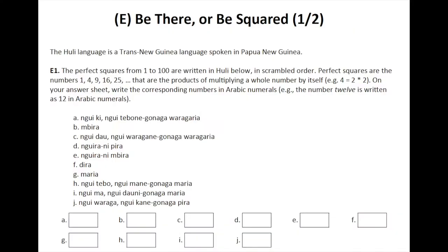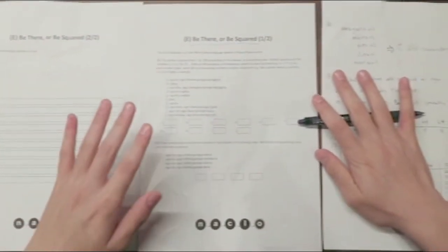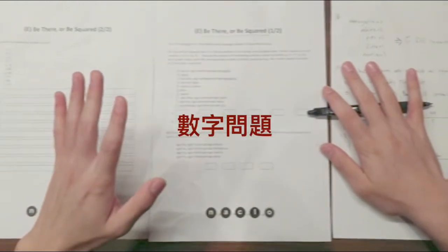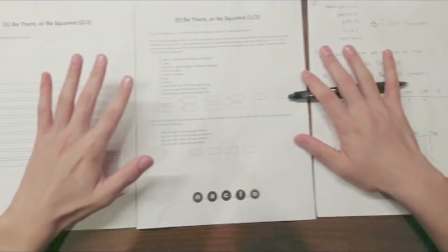I'm just gonna start. As you can see, this is a number problem. We know what the numbers are, we just don't know the correspondences.